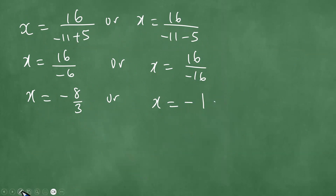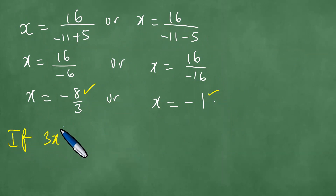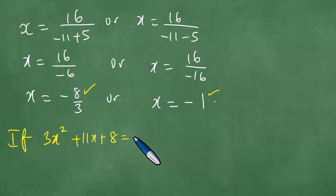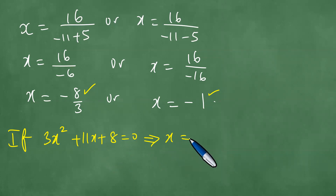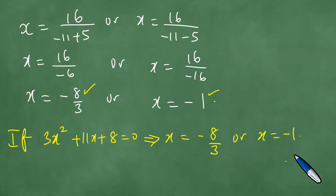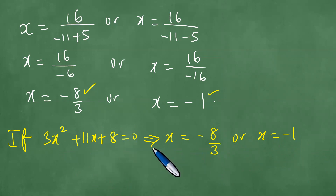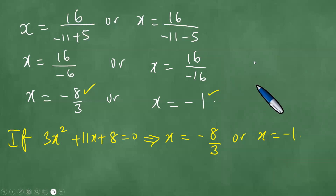This confirms the correctness of the method, because we saw before that 3x squared plus 11x plus 8 equals 0 implies x is minus 8 over 3 or x is minus 1. Therefore, the quadratic formula we have just proven works very well and gives correct solutions to quadratic equations. Thanks everybody for your attention and goodbye.